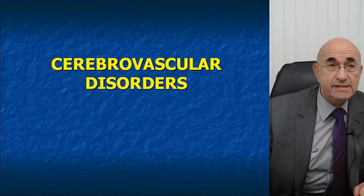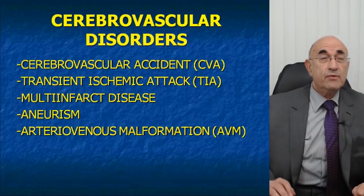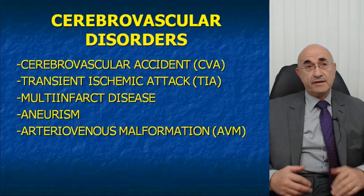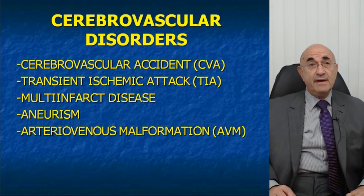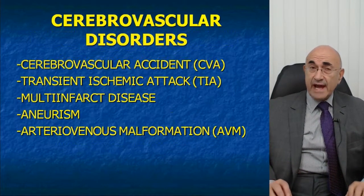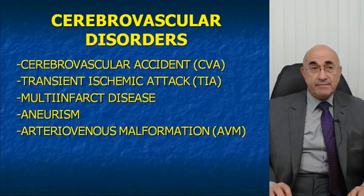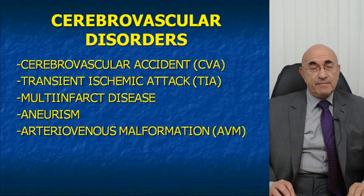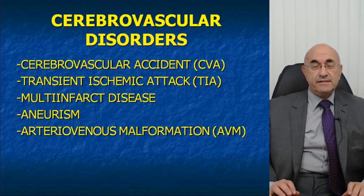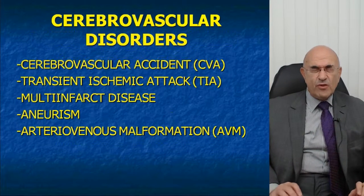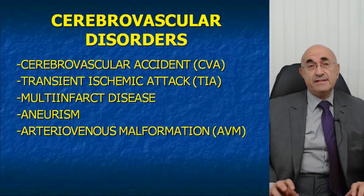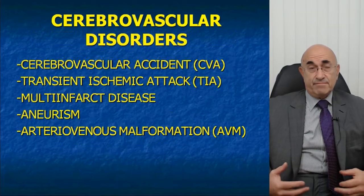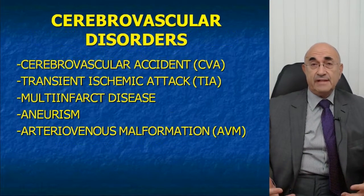Let's start with cerebrovascular disorders. When people talk about CVAs — cerebrovascular accidents — there are several of them: transient ischemic attacks, multi-infarct disease, aneurysms, and arteriovenous malformations. Many of these can be expressed in a lateralized fashion. In fact, CVAs are particularly likely to be expressed in a lateralized fashion.